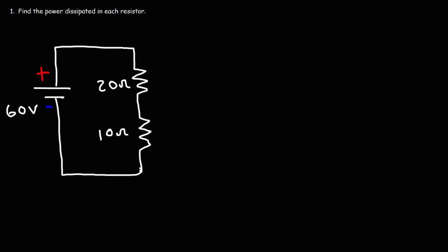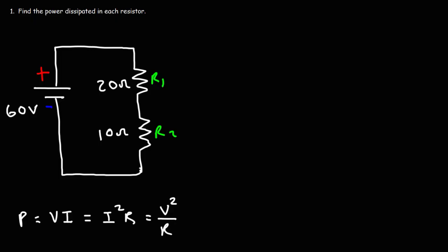In this video, we're going to talk about how to find the power dissipated in each resistor. In this example, we have two resistors in series. We can call them R1 and R2. In order to calculate the power dissipated by each resistor, we could use any one of three formulas: power equals voltage times current; power equals the square of the current times the resistance; or power equals the square of the voltage across the resistor divided by the resistance.